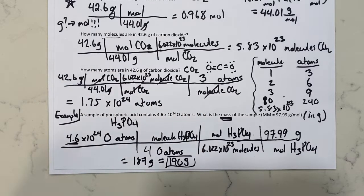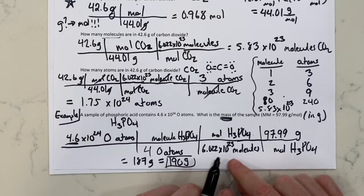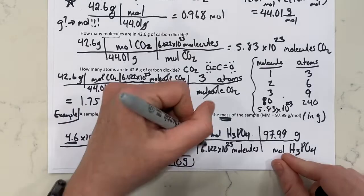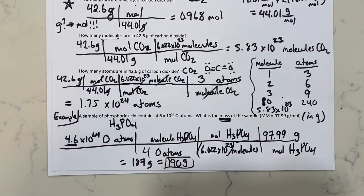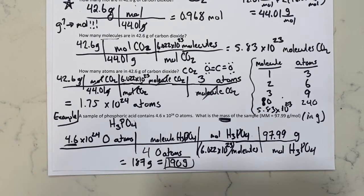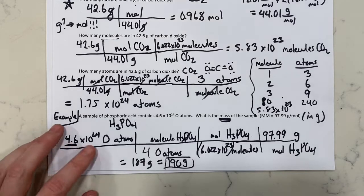If you ended up with an answer like times 10 to the 47, you forgot to put that in parentheses on your calculator. It's a really common problem, and it's an answer choice I'd likely have on an exam. Getting a mass bigger than the Earth would be a big deal.